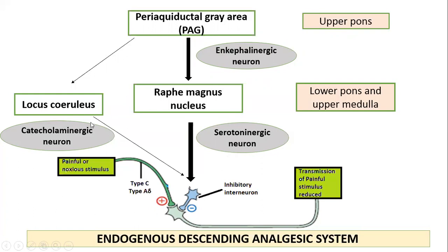The periaqueductal gray area neurons also project to the brainstem catecholaminergic neurons present in the locus coeruleus. These neurons release the neurotransmitter norepinephrine in the dorsal horn. The inhibitory interneuron, when activated, causes presynaptic inhibition in the dorsal horn and reduces the transmission of the painful stimulus.